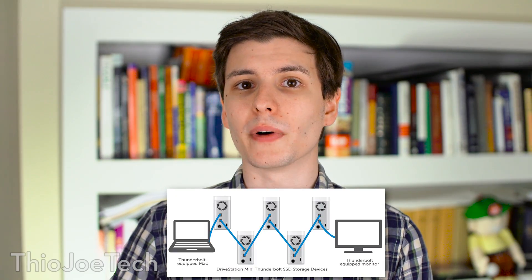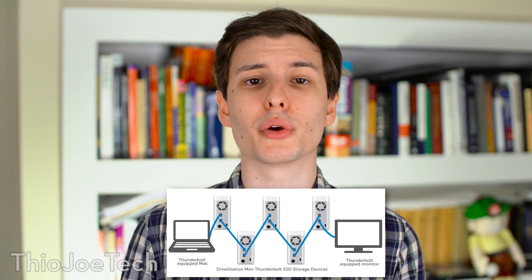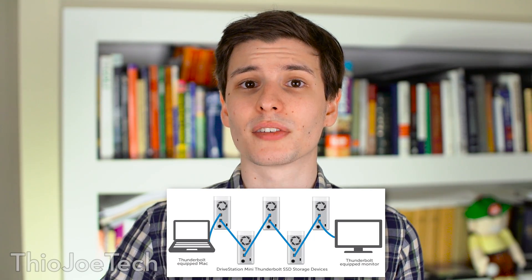Now Thunderbolt 3 is the next version of Thunderbolt, and it supports up to 40 gigabits per second of data transfer. This is double the previous version, Thunderbolt 2, which was 20 — so even Thunderbolt 2 was faster than USB 3.1. And the cool thing about Thunderbolt is that you can actually daisy-chain devices together, so with one port you can connect up to six different devices through one Thunderbolt input into the computer.